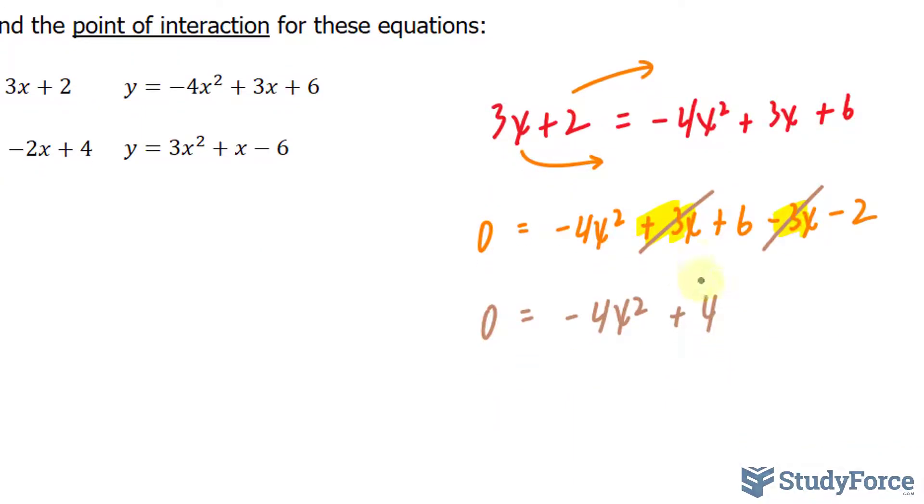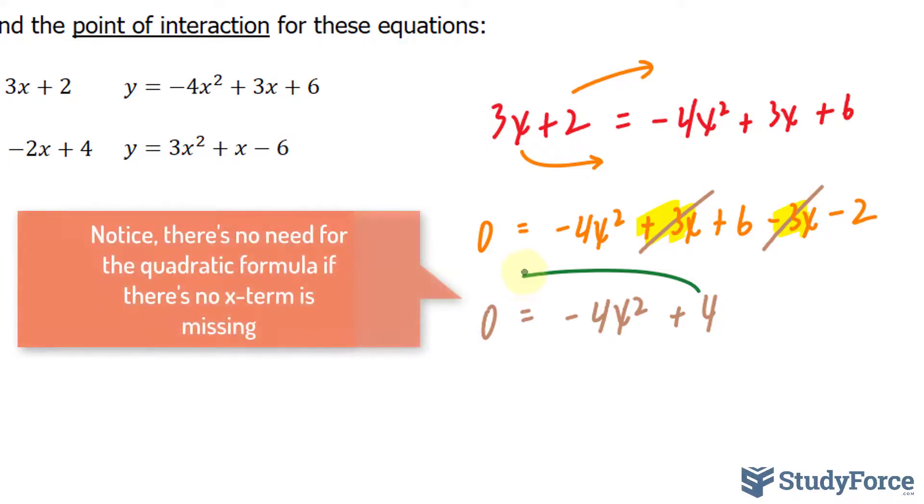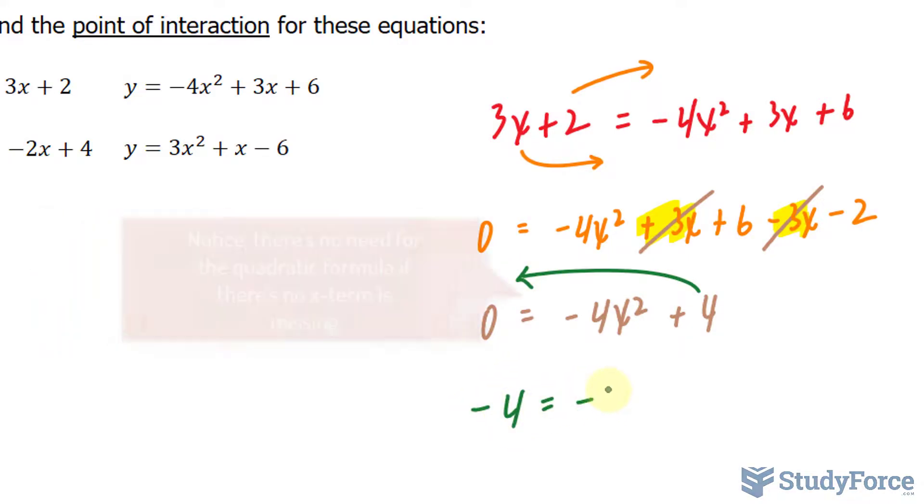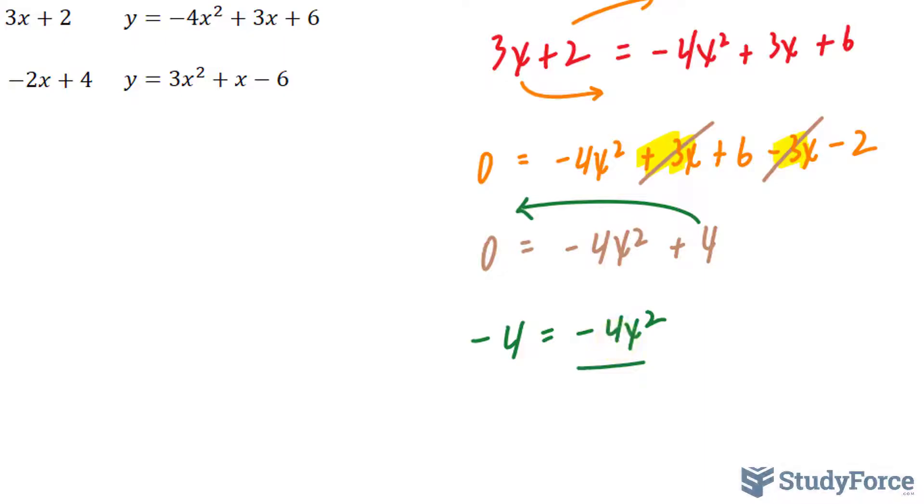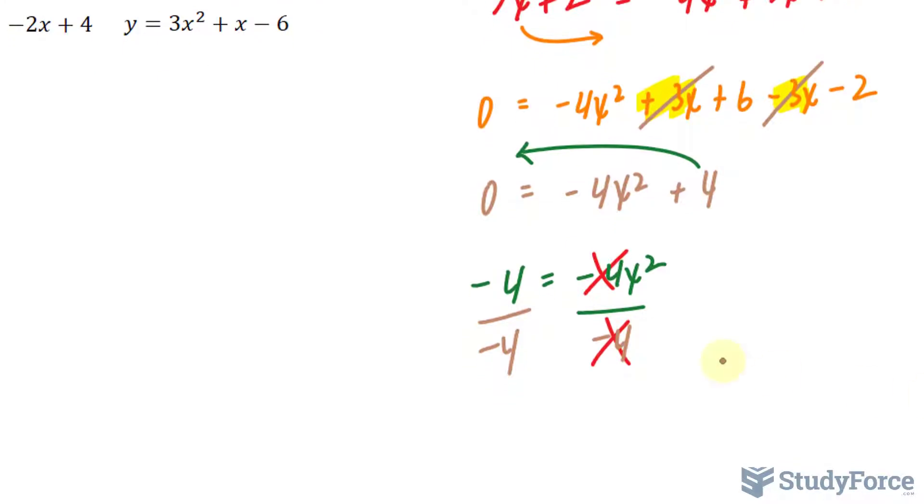We have to solve for X. And for that, I'll bring that positive 4 over. It becomes negative 4 is equal to negative 4X squared. Dividing both sides by negative 4 to isolate for this X, this negative 4 and that negative 4 cancel out. And negative 4 divided by negative 4 makes positive 1, so positive 1 is equal to X squared.